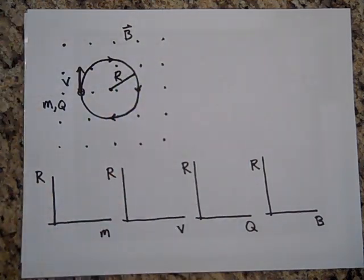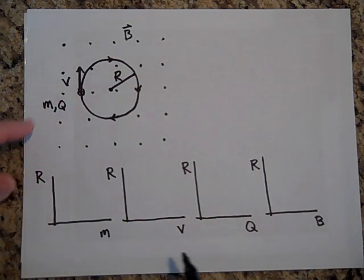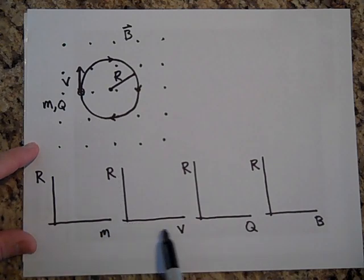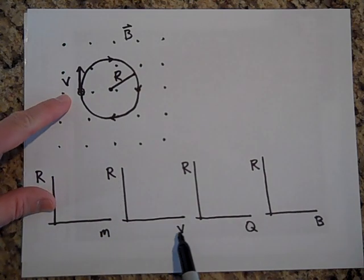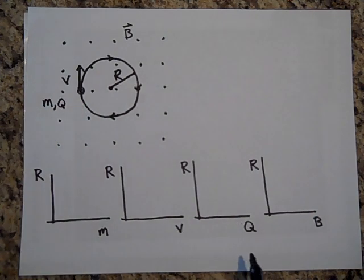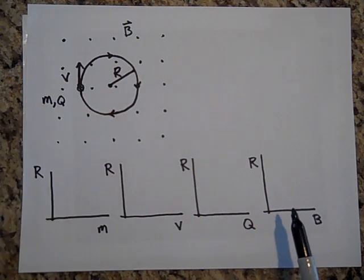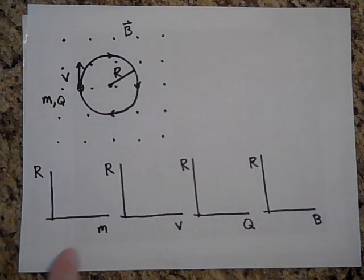And so here's my question. If I were to graph how R is dependent on the mass of the particle, and then make another graph of how R is dependent on the velocity of the particle, and then make another graph on how R is related to the charge, and then how the radius of this path, the curve, the circular path, is related to the magnetic field, what would you draw in for all those? Go ahead and try and draw in those things and see if we see what you get.